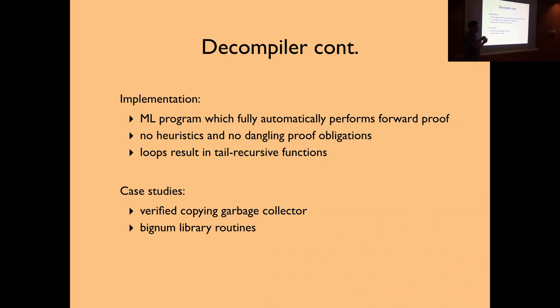The actual decompiler does this more carefully because it wants to keep the structure with let expressions and if expressions. Otherwise this is roughly what it does — it composes everything together, reads off the function, and returns the function and the theorem derived. The implementation is an ML program that sits inside the HOL theorem prover, on top of the kernel. It fully automatically performs forward proof, has no heuristics, and no dangling proof obligations other than those packaged into side conditions. Loops result in recursive functions, and this can be used for non-trivial examples such as a copying garbage collector and big number library routines.